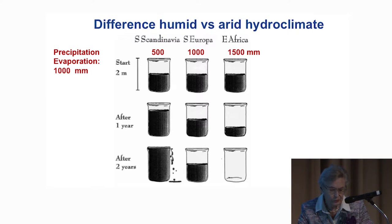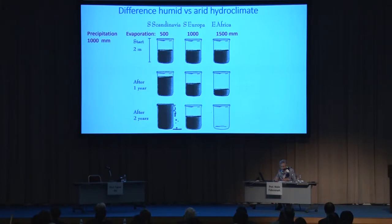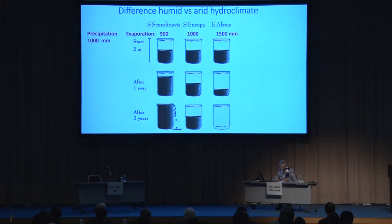The mid container stands in southern Europe, where evaporative demand is 1,000 millimeters. The first year, 1,000 millimeters is added with rainfall while evaporation consumes 1,000, so the water level remains the same — and the same the second year. The third container stands in eastern Africa, where evaporative demand is 1,500 millimeters. The first year adds 1,000 millimeters of rainfall, but 1,500 millimeters is consumed, so the water level decreases. The second year, the last water is consumed and the container is empty. This experiment demonstrates the hydroclimatic differences produced by evaporation demand.